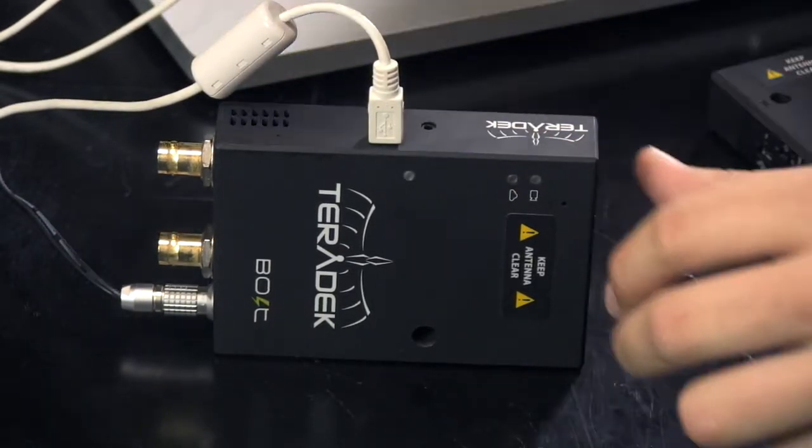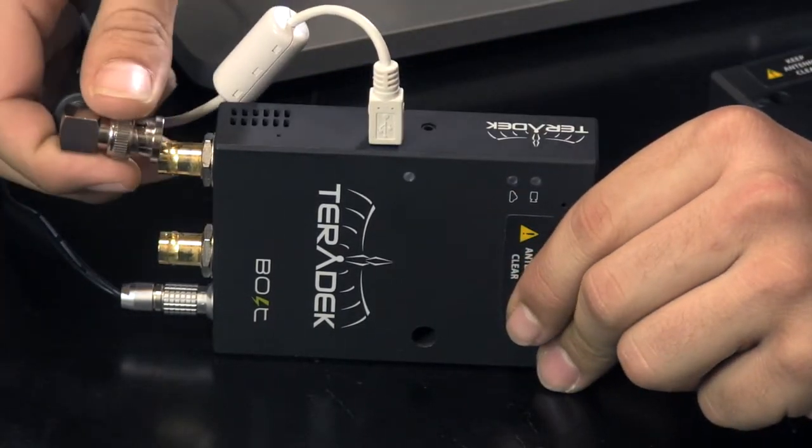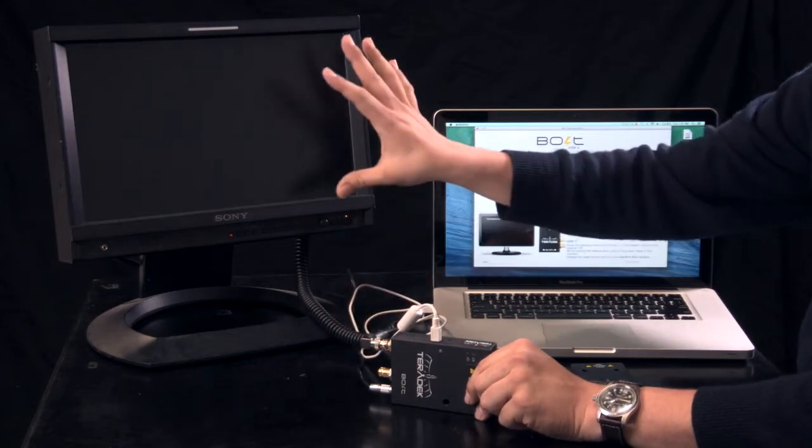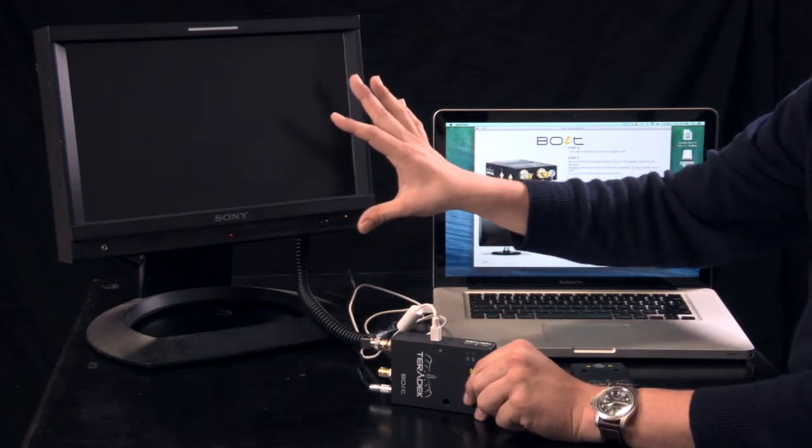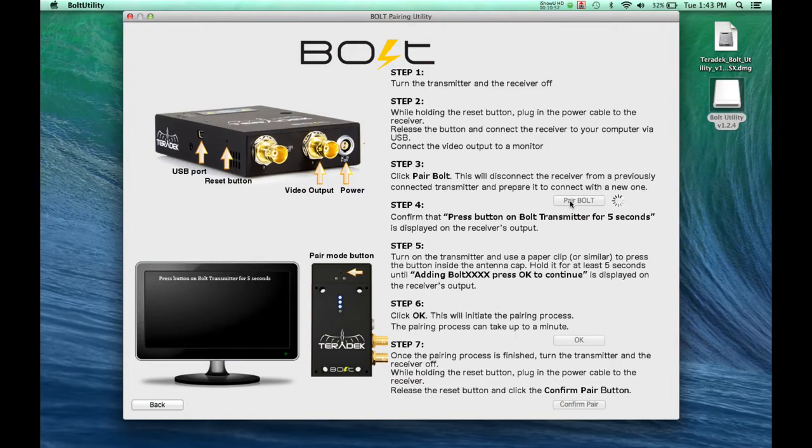Release the button and connect the video output to your monitor. You will not get video in the monitor at this point. Now, click Pair Bolt.